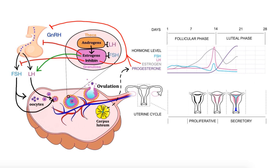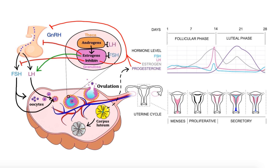Now, if fertilization of the egg does not occur during this short period of time, the corpus luteum will start to break down, causing levels of both estrogen and progesterone to fall dramatically. It is this sudden decline in progesterone and estrogen levels that causes the uterine lining to break down and ultimately come out in the form of menstrual bleeding, also called menses, which marks the start of the next follicular phase.